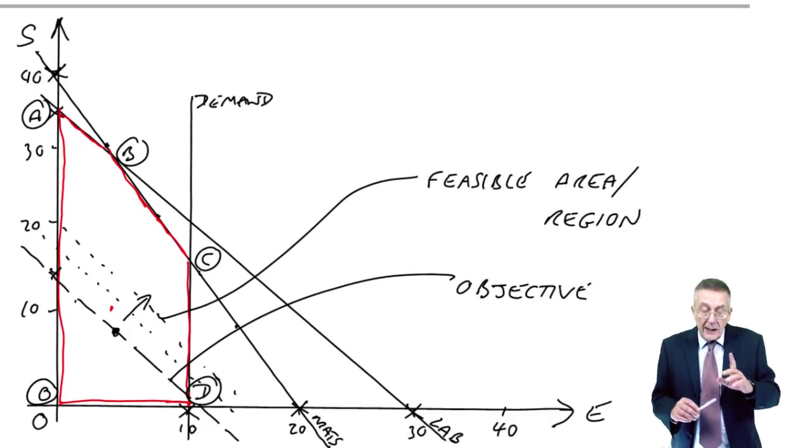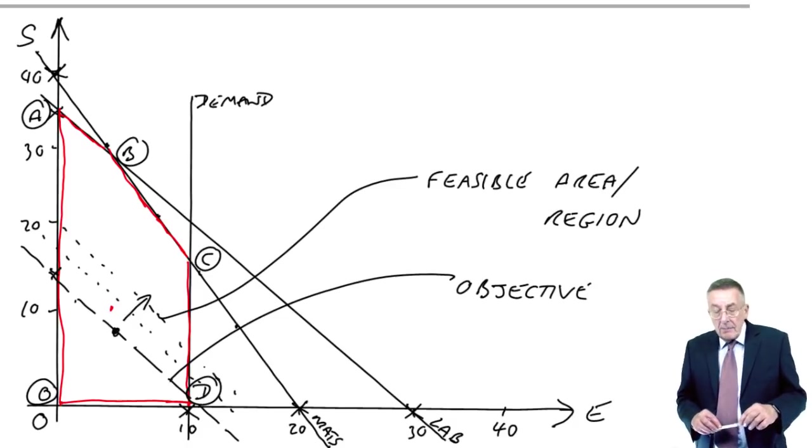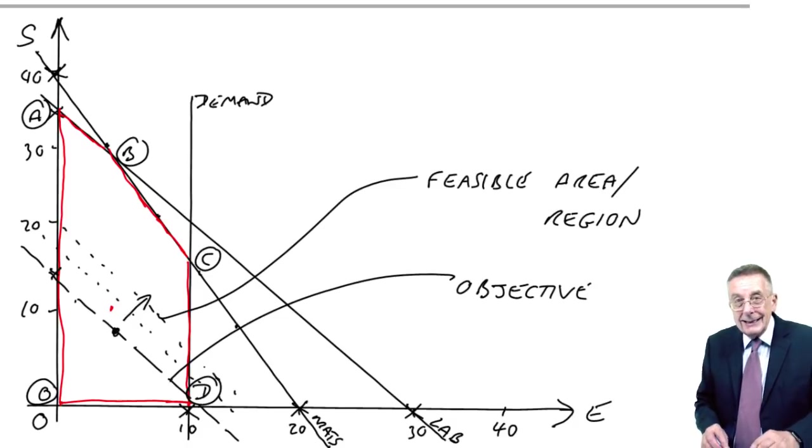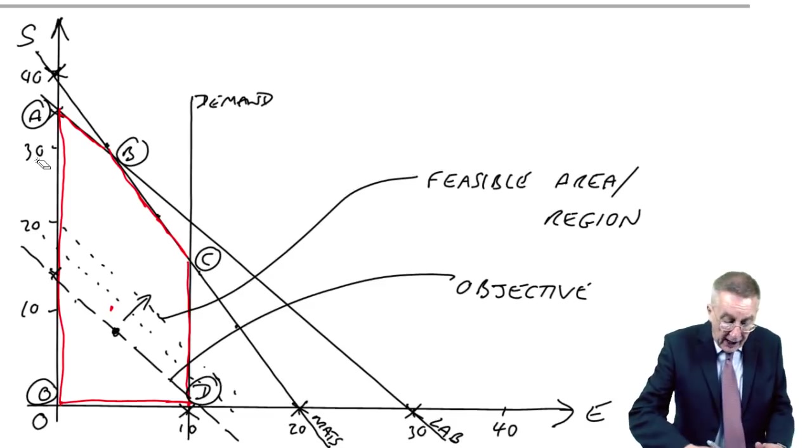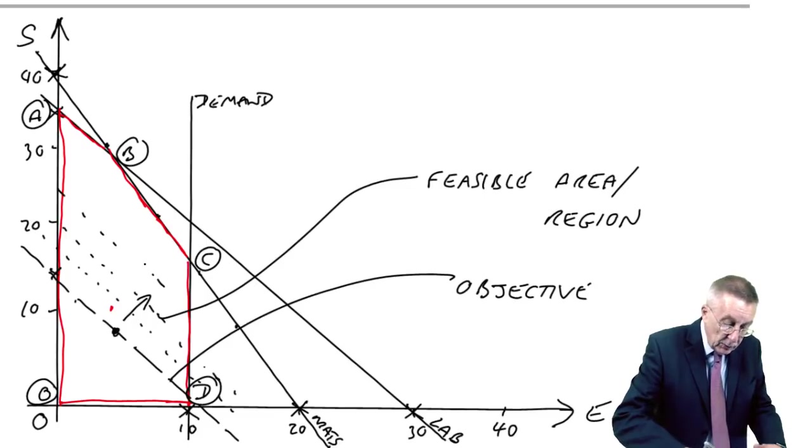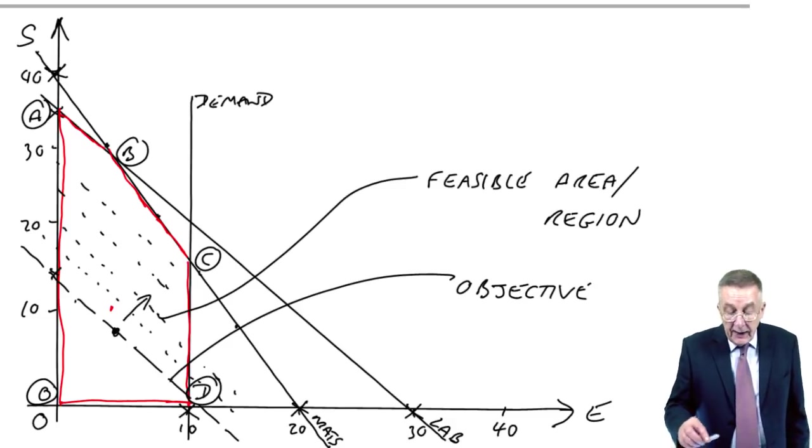But we take this line. We use a ruler. And we move it as far away. This is, you don't draw this. This is imagining me keep moving the line. We move it as far away as we can from zero.